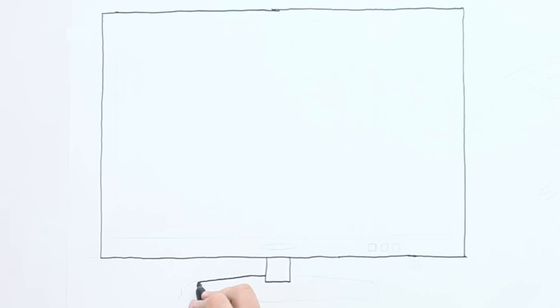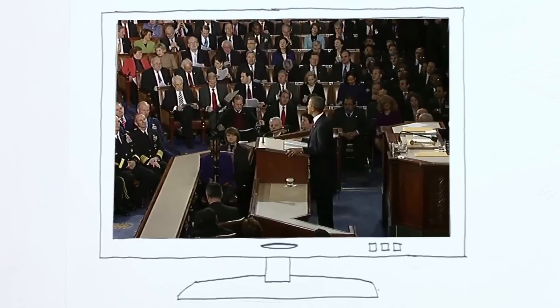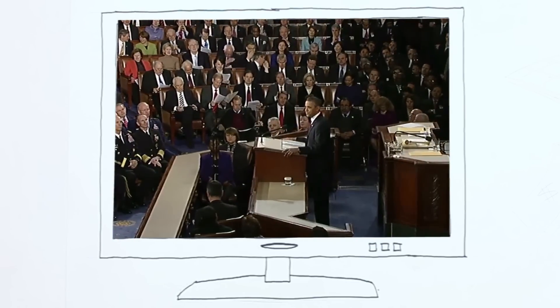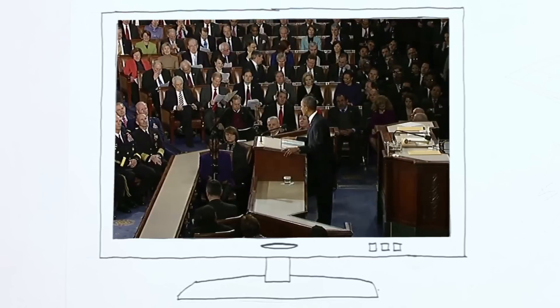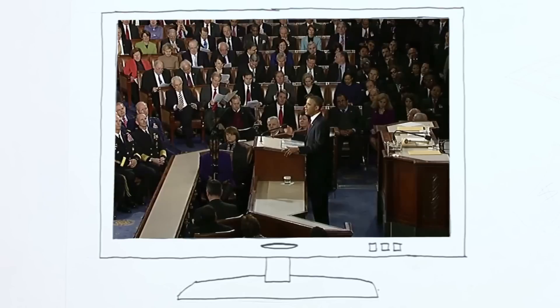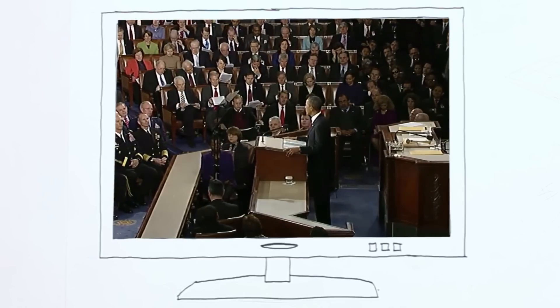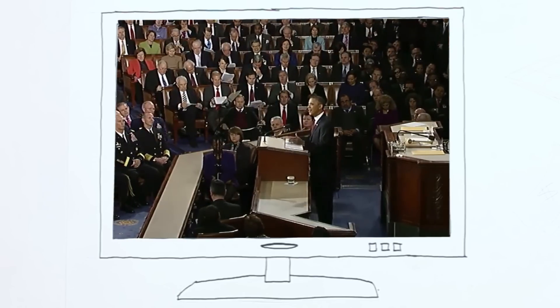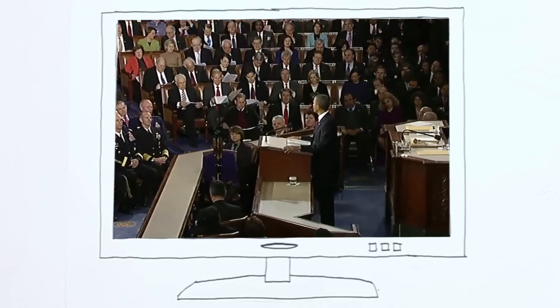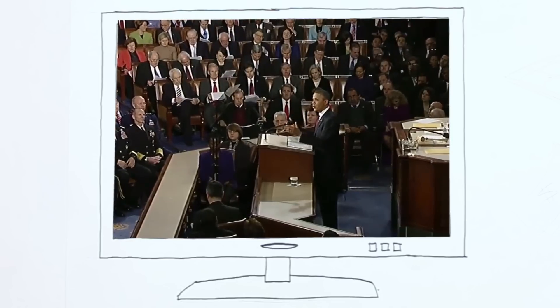In his State of the Union address, President Obama issued a challenge. Of course, the easiest way to save money is to waste less energy. So here's a proposal. Help manufacturers eliminate energy waste in their factories and give businesses incentives to upgrade their buildings. Their energy bills will be $100 billion lower over the next decade. And America will have less pollution, more manufacturing, more jobs for construction workers who need them.